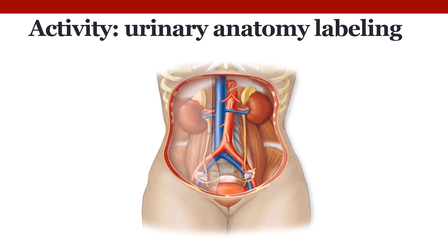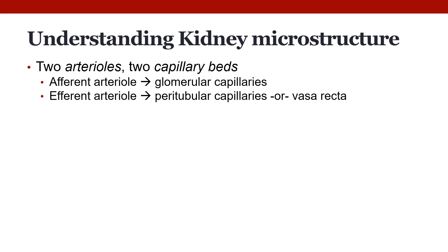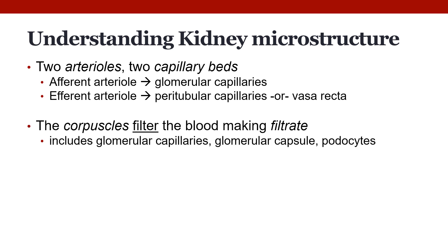The next part is the microstructure. The kidneys have two arterioles and two capillary beds. There's an afferent arteriole that brings blood to the glomerular capillary, and then an efferent arteriole that brings blood to the peritubular capillaries or the vasa recta. There are also the corpuscles, which filter the blood — what goes through this filter is called filtrate. This includes the glomerular capillaries, the glomerular capsule, and the podocytes.